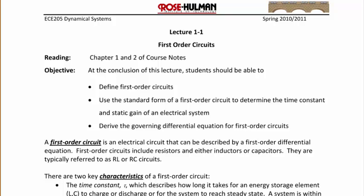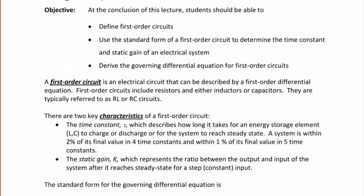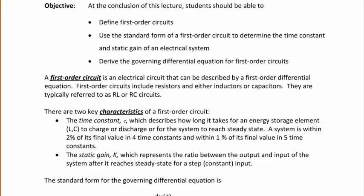There are two characteristics of a first order circuit. The first one is the time constant tau, which describes how long it takes for an energy storage element, being an inductor or a capacitor, to charge or discharge, or for the system to reach steady state. A system is within 2% of its final value in four time constants, and within 1% of its final value in five time constants. The static gain K represents the ratio between the output and input of the system after reaching steady state for a step constant input.